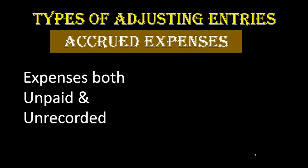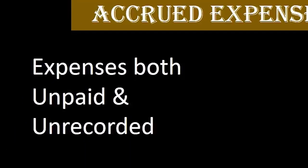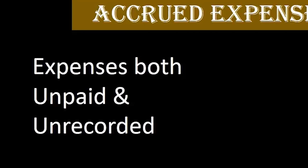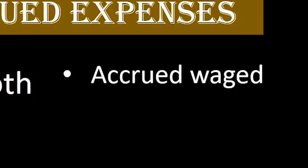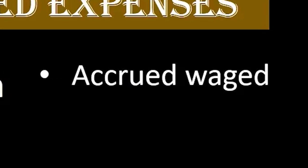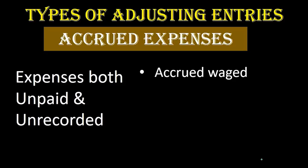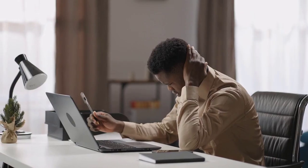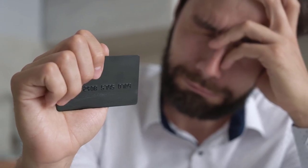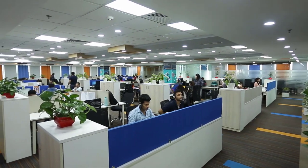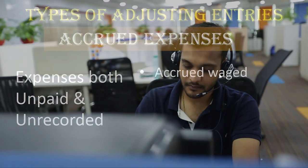The next type of adjusting journal entry is accrued expenses — both unpaid and unrecorded as of the cutoff date. The most typical example is accrued wages, also called wages payable. It doesn't make sense to record wages on a perfectly accrual basis every hour or minute. Instead, we record payroll transactions closer to when we actually pay payroll. Otherwise, to be on a perfectly accrual system, we would have to accrue money owed to employees every second, which would not make sense.